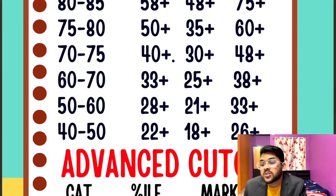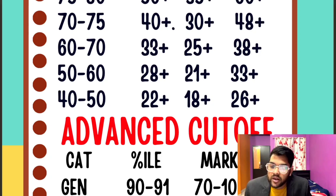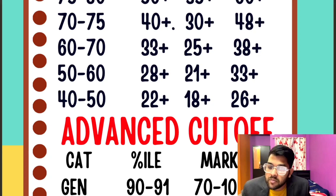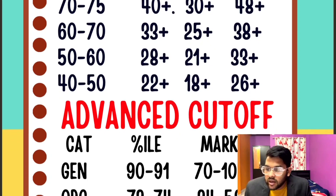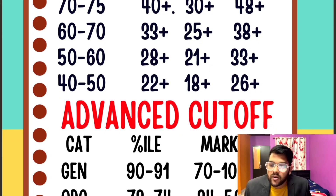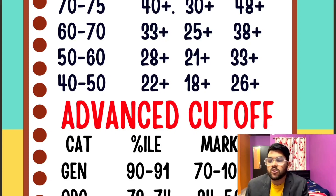Now for the most important topic — the JEE Advanced cutoff. The percentile remains the same regardless of first or second attempt; only marks differ by paper type. For General category, 90 to 91 percentile is the cutoff to be eligible for JEE Advanced, with 70 to 100 marks depending on the paper type. Being eligible means you can appear in JEE Advanced — it doesn't guarantee an IIT seat.